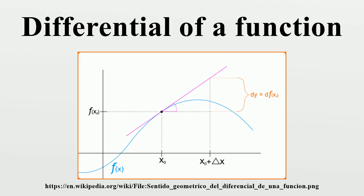A consistent notion of differential can be developed for a function f mapping R^n to R^m between two Euclidean spaces. Let x and delta x be a pair of Euclidean vectors in R^n. The increment in the function f is defined, and if there exists an m times n matrix A such that the vector epsilon approaches zero as delta x approaches zero, then f is by definition differentiable at the point x. The matrix A is sometimes known as the Jacobian matrix, and the linear transformation that associates to the increment delta x in R^n the vector A times delta x is, in this general setting, known as the differential df of f at the point x.